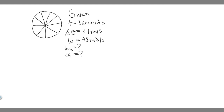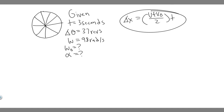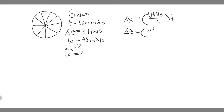The formula we can use — which you should know — is delta X equals (V plus V-sub-zero) over two, times T. The rotational kinematic version is: the change in theta equals (omega plus omega zero) over two, times T. You just replace the normal kinematic variables with rotational ones. We'll plug in our numbers to solve for omega zero, which will then allow us to solve for alpha.